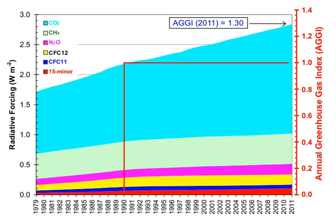Under a consumption-based accounting of emissions, embedded emissions on imported goods are attributed to the importing country rather than the exporting country. Davis and Caldera, 2010, found that a substantial proportion of CO2 emissions are traded internationally. The net effect of trade was to export emissions from China and other emerging markets to consumers in the US, Japan, and Western Europe.